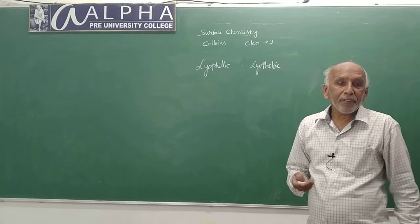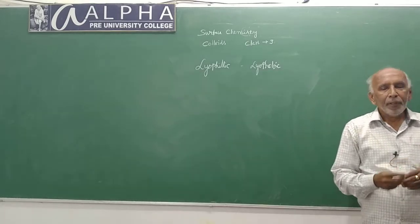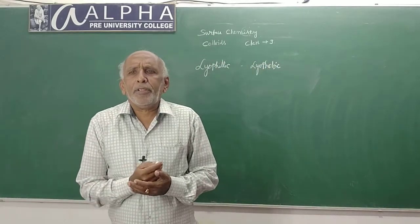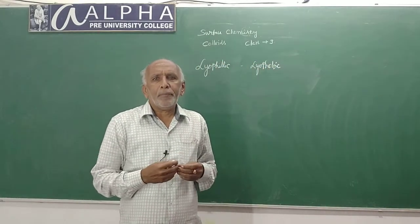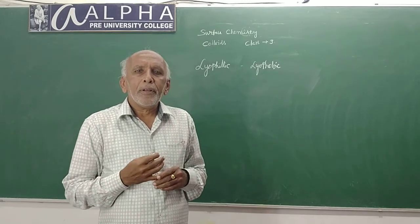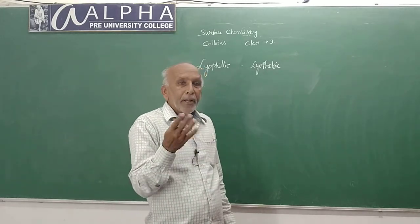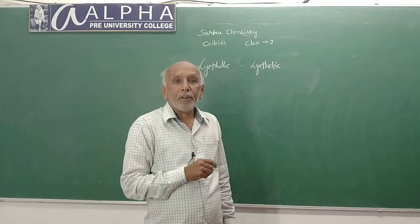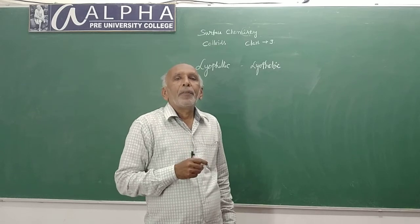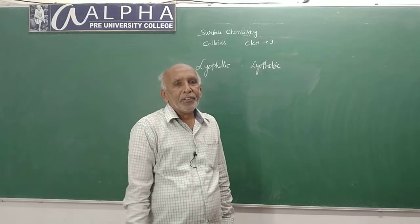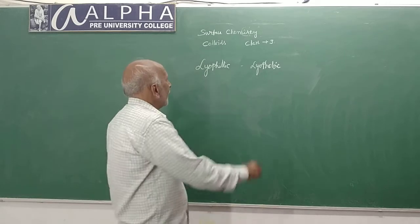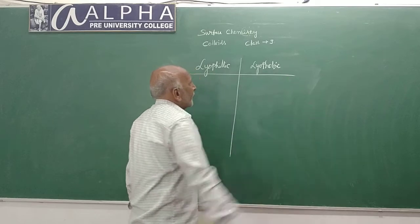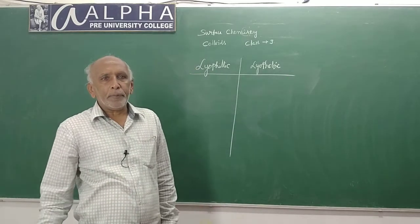Water-hating sols are hydrophobic; water-loving sols are hydrophilic. Examples for hydrophobic sols include metal sols — gold sols, silver sols, copper sols, ferric hydroxide sols, and even sulfur sols. They are all lyophobic sols, that is solvent-hating sols. Now we shall see the differences between these two types of sols, which are important for examination.